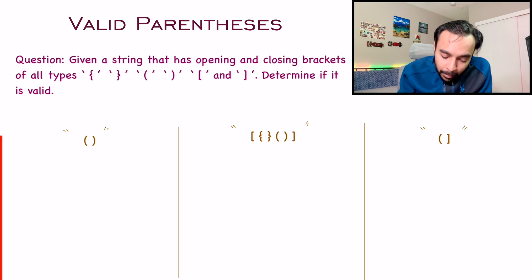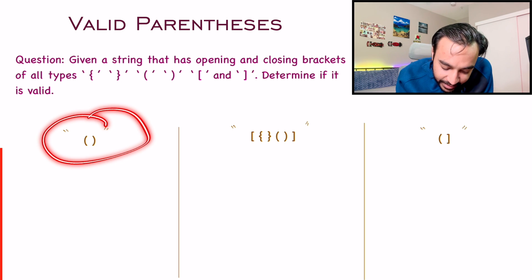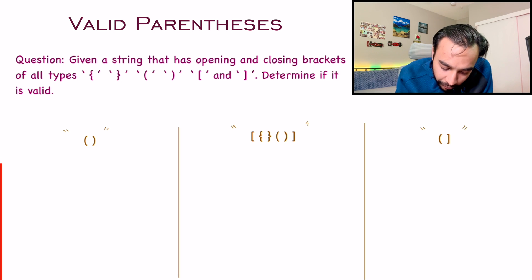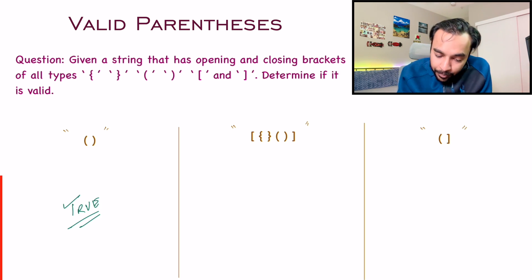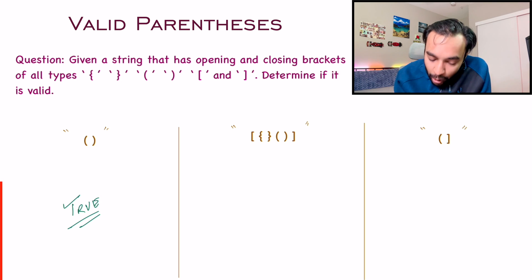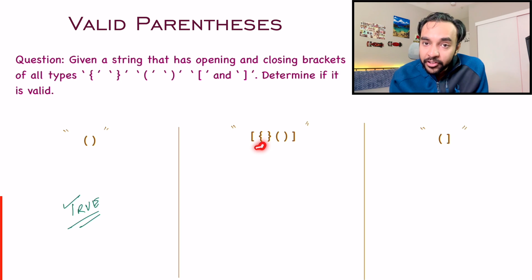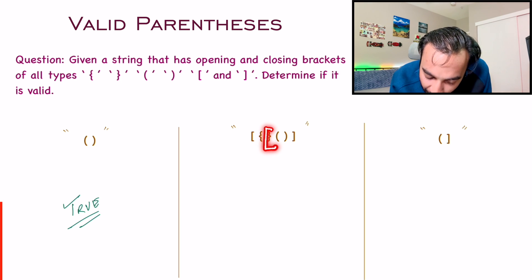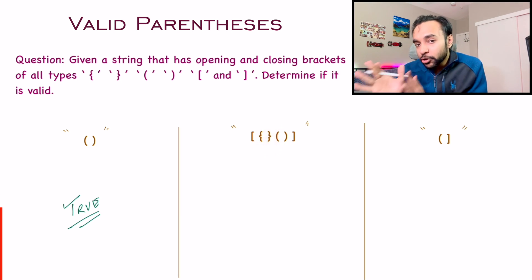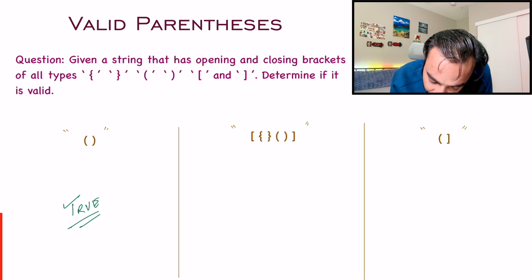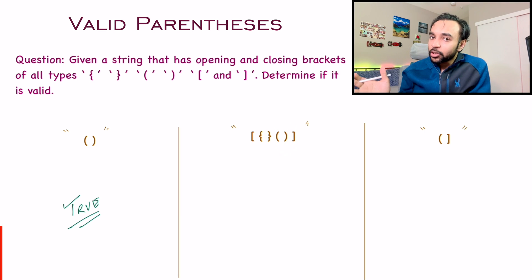Let us look at some sample test cases. For the first test case, we open a normal bracket and close it, so this string is valid and we return true. For the second test case, we open a square bracket first and then open a curly bracket. After that, we close the curly bracket — so far so good. Then we open a normal parentheses and close it as well, so this is also valid.